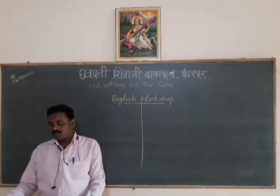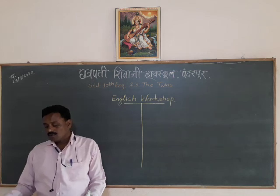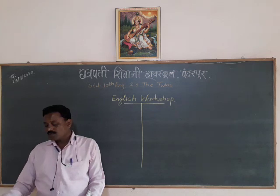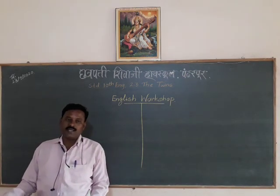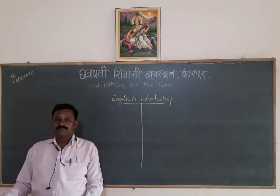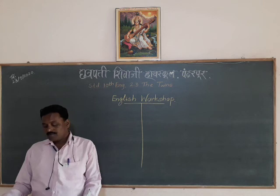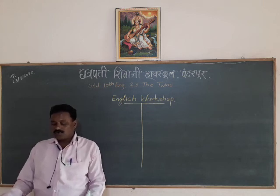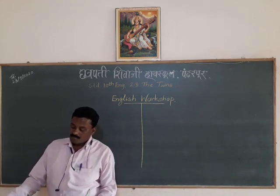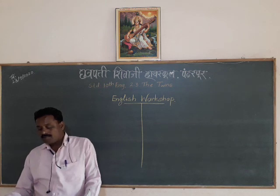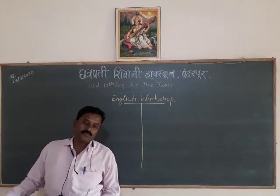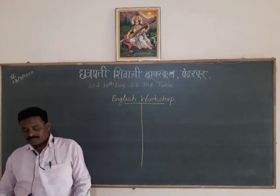The second question is: pick out 4 situations in the lives of the twins which are too absurd and senseless to believe. First, the people began mistaking one for the other. Second, the speaker's intended bride became his brother's wife.